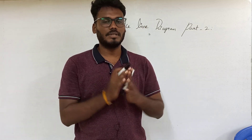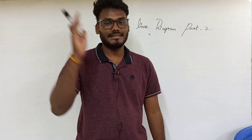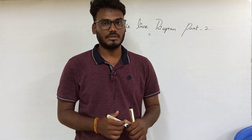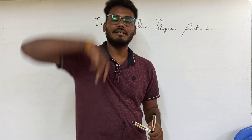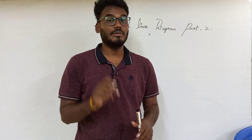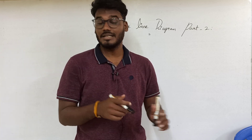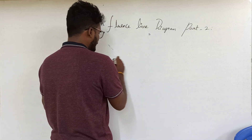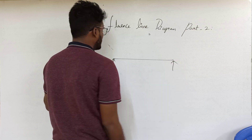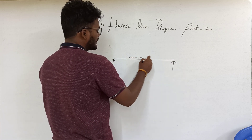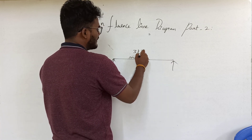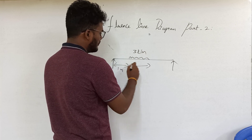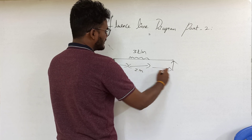We have a simply supported beam. Reaction at A is ILD, reaction at B is ILD. We will solve a question with a UDL. There is a simply supported beam where the UDL is 3 ton per meter. This distance is 1 meter, then 2 meters, and again 3 meters.